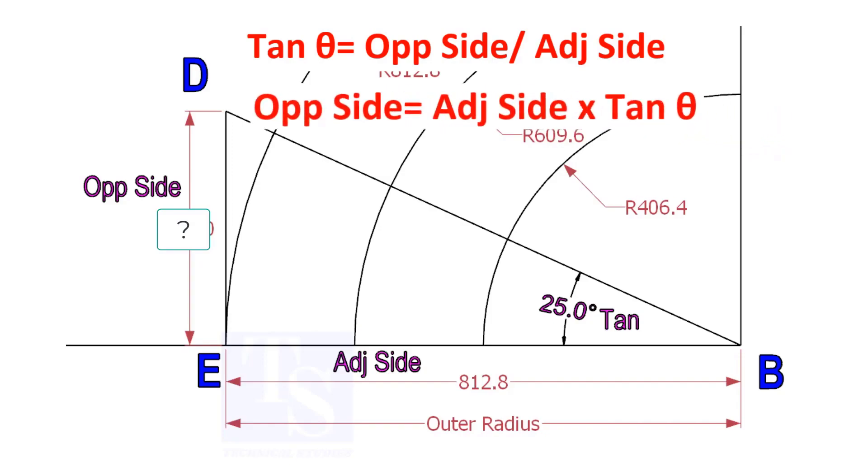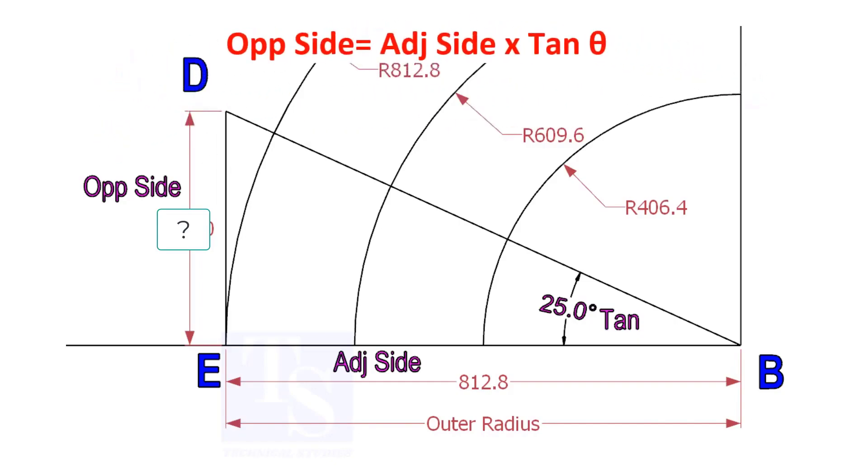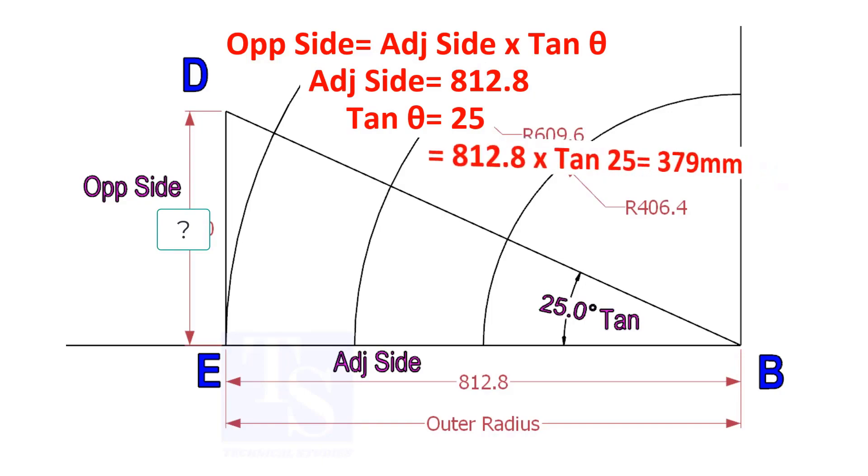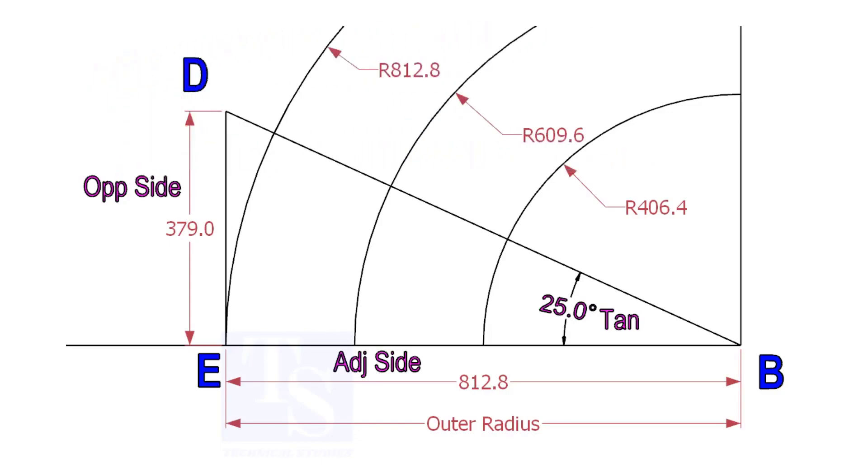Opposite side equals adjacent side multiplied by tan-theta. 812.8 into tan-25 equals 379 millimeters. Draw the line ED vertically and the slant line DB.